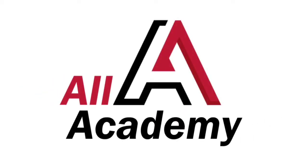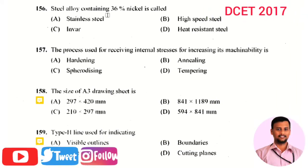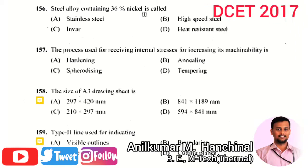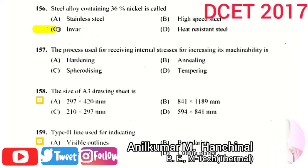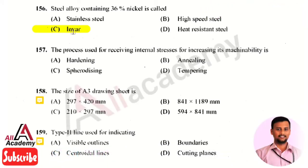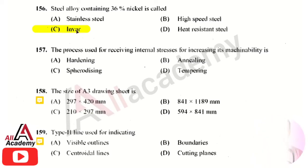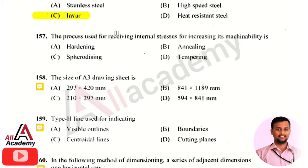All Academy is always with you. The next question in the mechanical section is: steel alloys containing 36% of nickel is called? The right answer is option 3, that is Invar. Invar are the steel alloys which contain 36% of nickel in their total constitution.